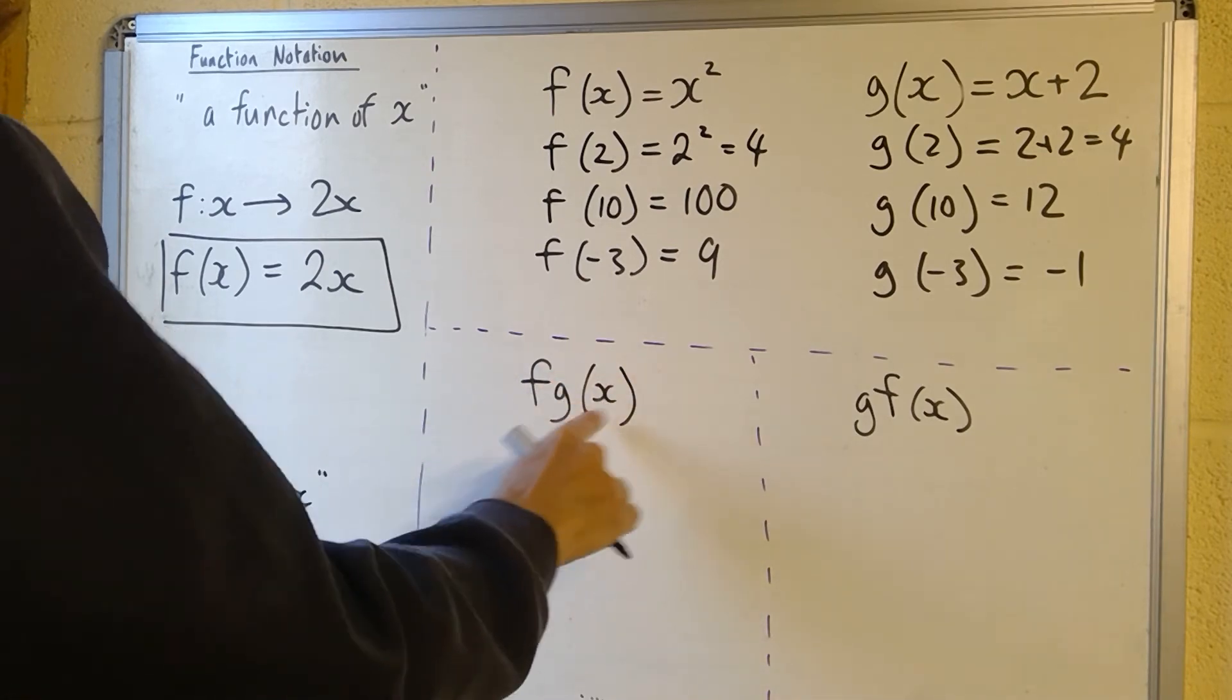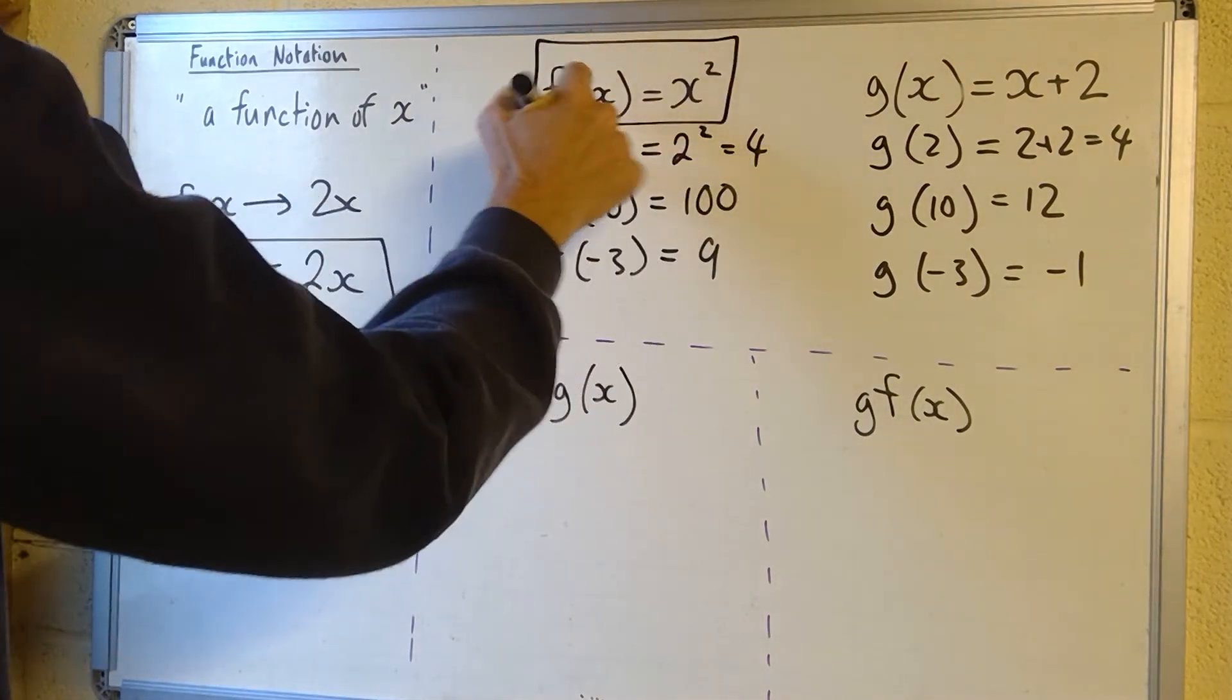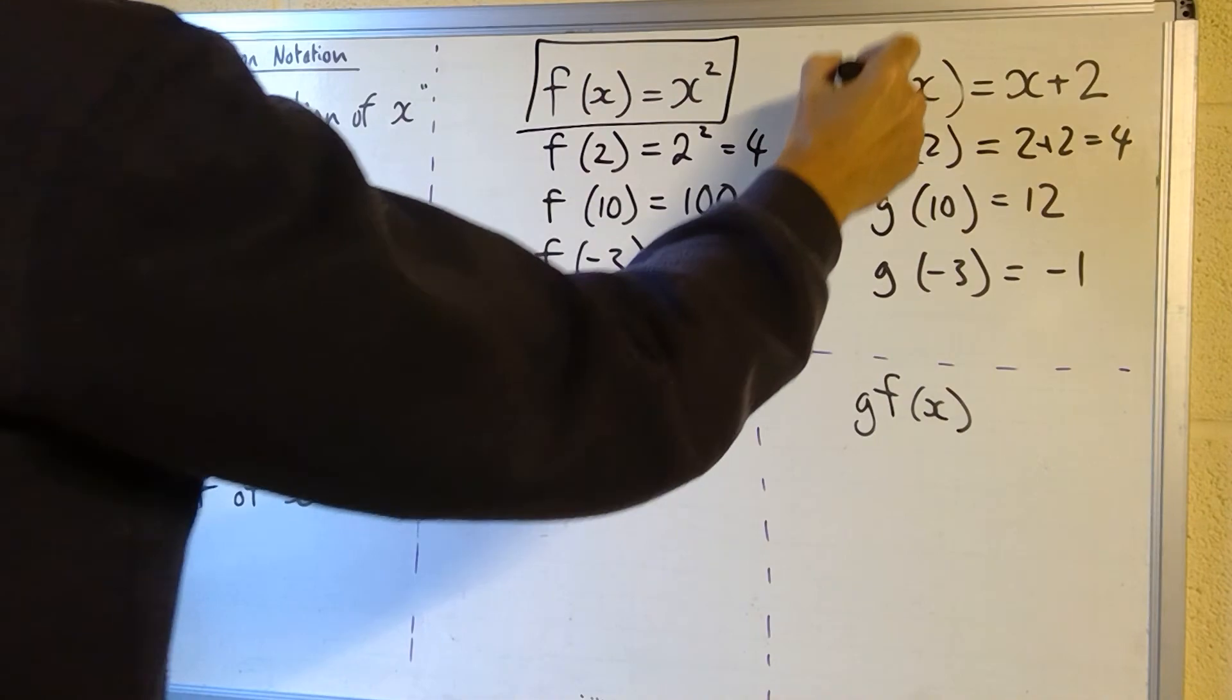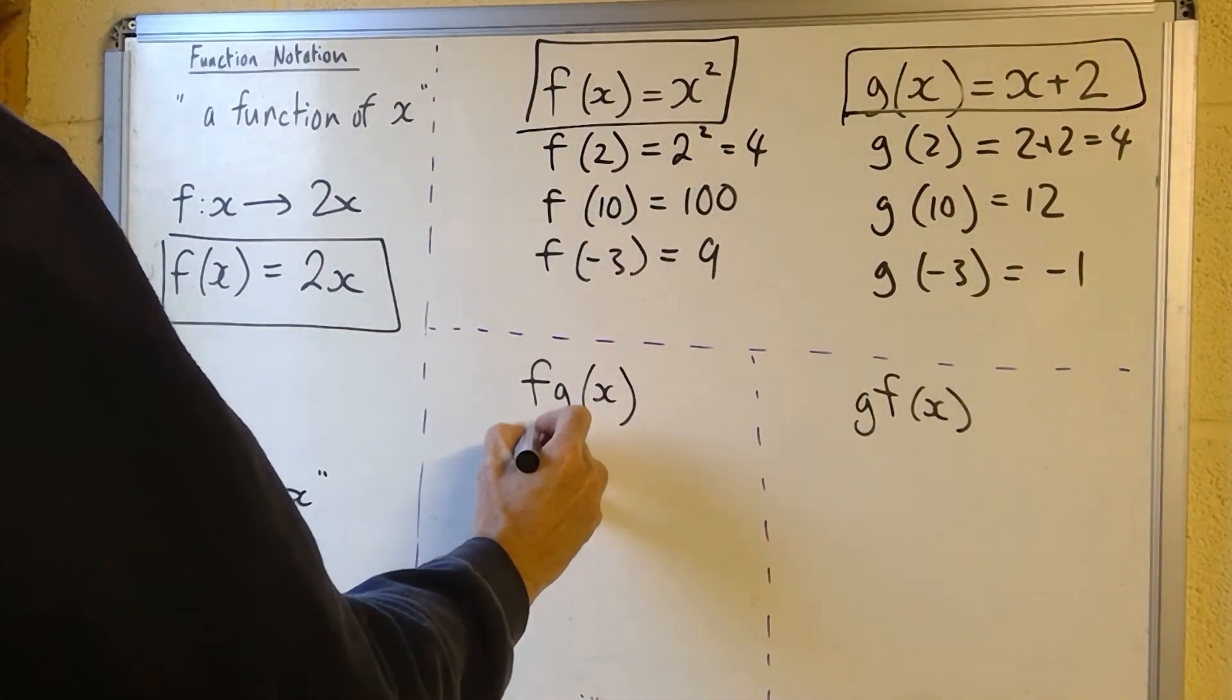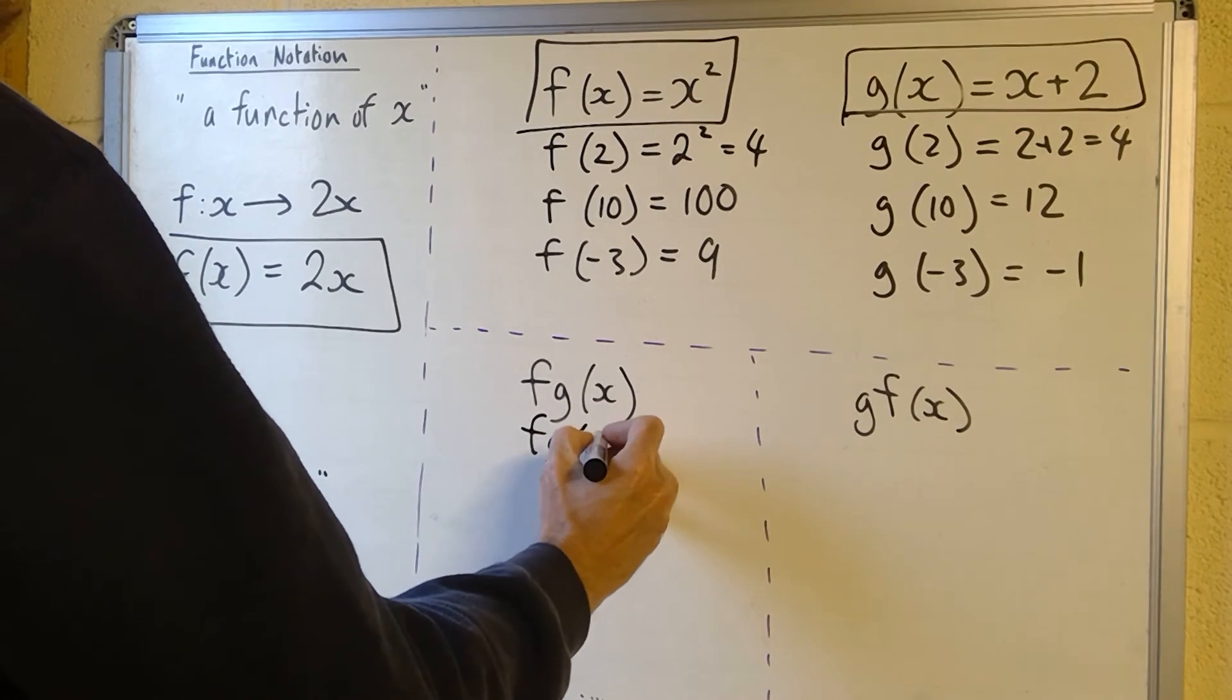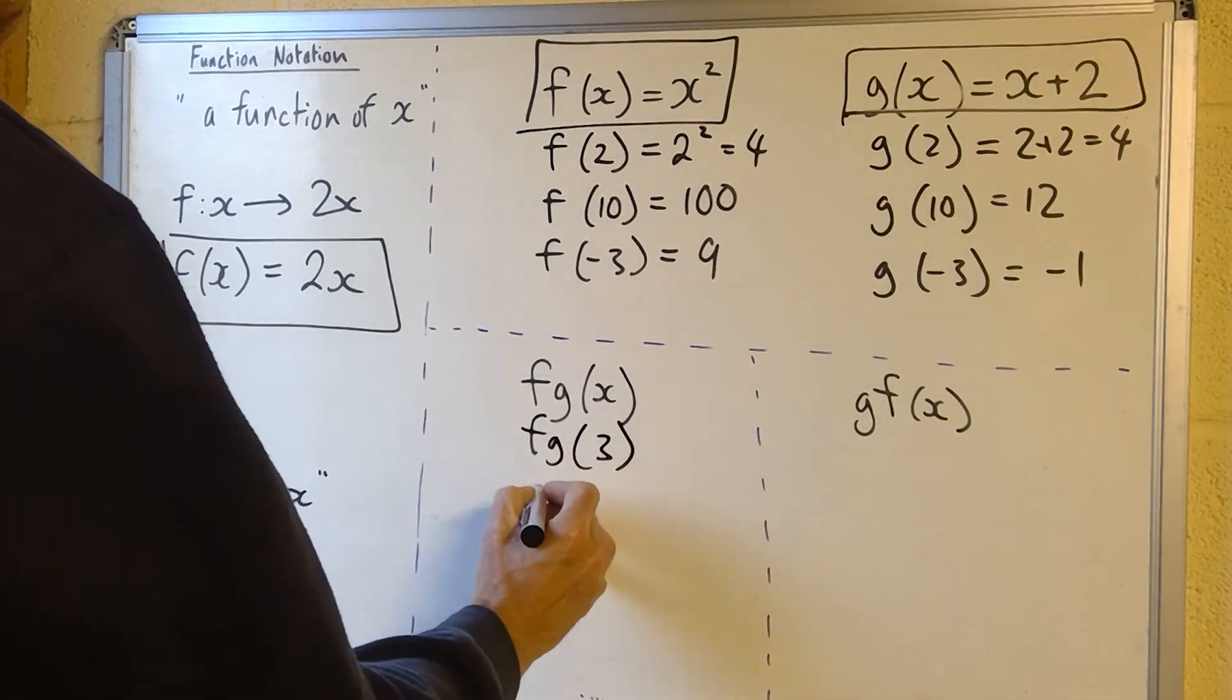I'll show you what I mean. I'm going to use these two functions here. So f of x is x squared, g of x equals x plus 2, and I'm going to do f of g of 3. So f of g of 3, so g of 3 would be 3 plus 2 which will be 5.